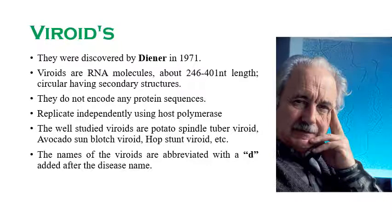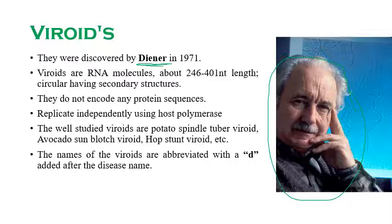Viroids were first discovered by Diener in the year 1971. Diener was a scientist working as an Agricultural Research Scientist at the USDA. He was working on abnormal potato growth and discovered a new type of plant pathogen — the viroid. The first viroid discovered is the potato spindle tuber viroid.